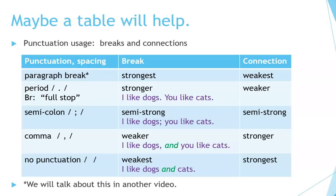The next one is the comma. It has a weaker break but a stronger connection. For example: I like dogs, and you like cats. Notice the word 'and' is connecting the two sentences together. The last one is no punctuation at all — this is the weakest break and the strongest connection: I like dogs and cats. Dogs and cats are both things that I like.